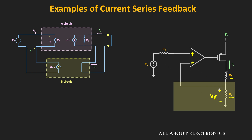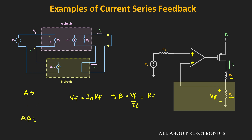The feedback voltage Vf = I0 × Rf, so the feedback factor β = Vf/I0 = Rf. As you can see, the feedback factor has units of resistance, while the transconductance gain A has units of inverse Ohm — therefore Aβ is dimensionless. This must be true for all feedback amplifiers, so that the equations for input/output impedance and feedback gain remain valid. This output current is typically used to drive LEDs or laser diodes, which act as the load.